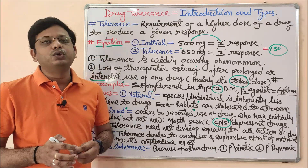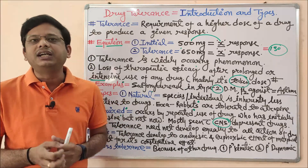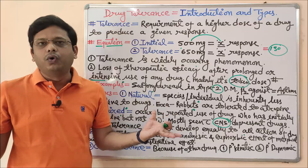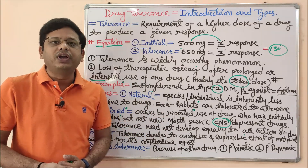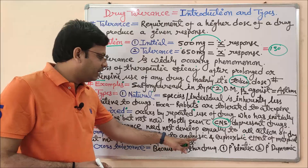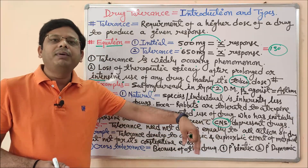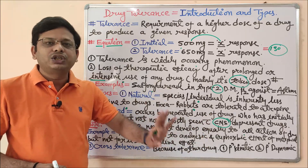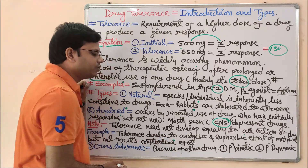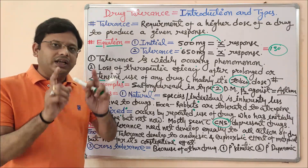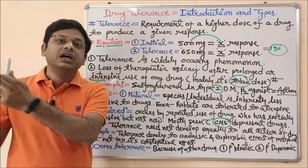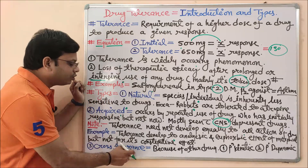A clear example: the tolerance developed to the analgesic and euphoric effects of morphine will not affect its constipative effect. Morphine is used for analgesia or to produce euphoria — a feeling of well-being. If you take morphine for these two purposes, you will become tolerant to these actions. However, morphine's action of causing constipation will not be affected. This demonstrates that a drug tolerated for one activity is not necessarily tolerated for another.